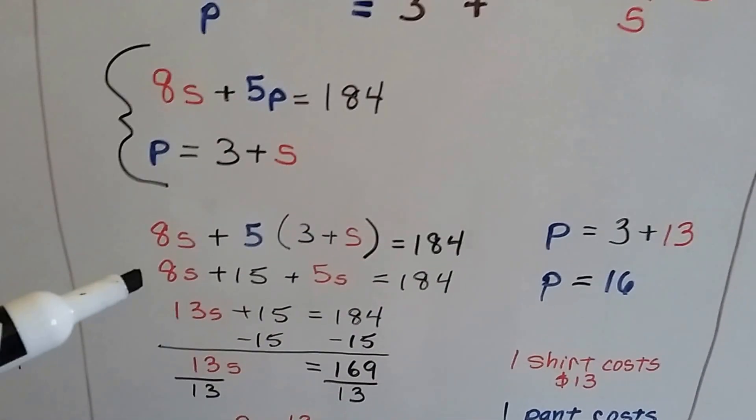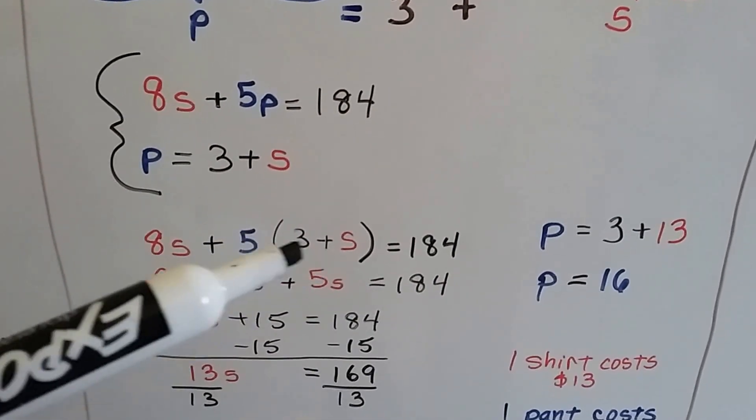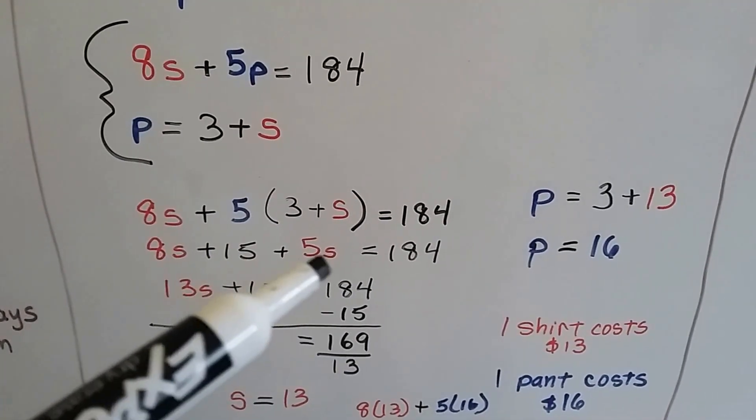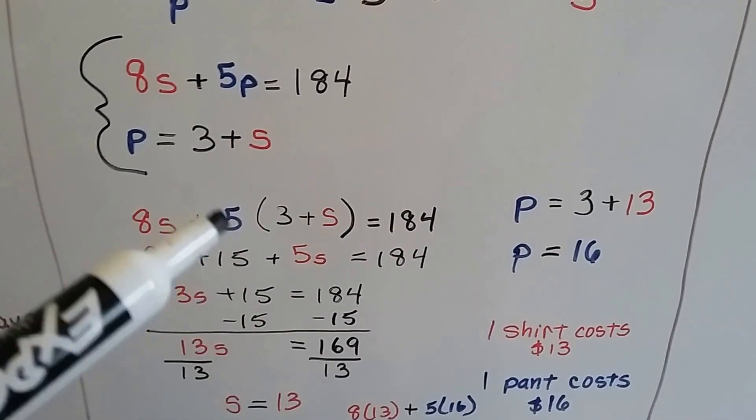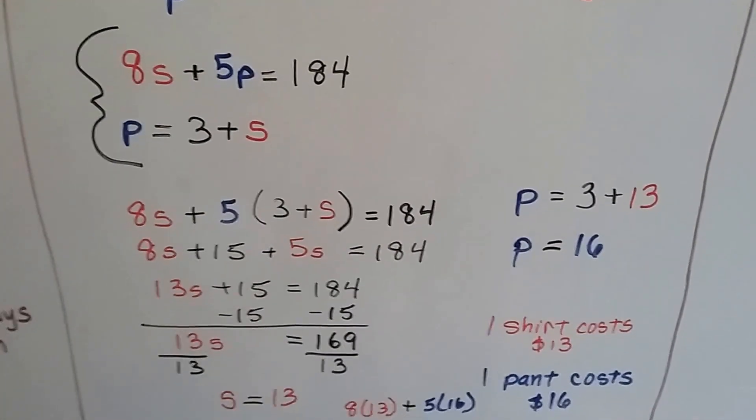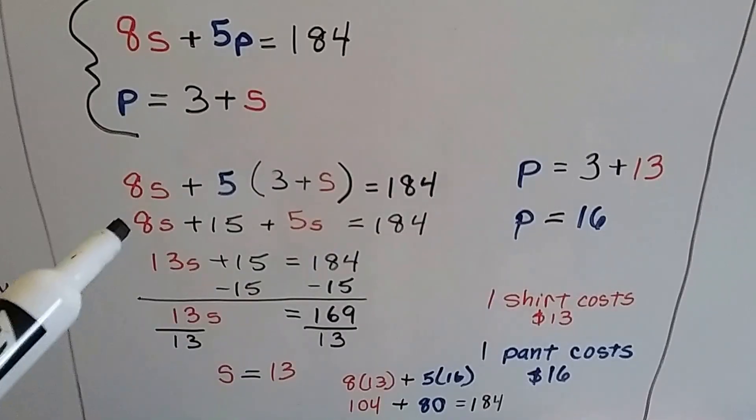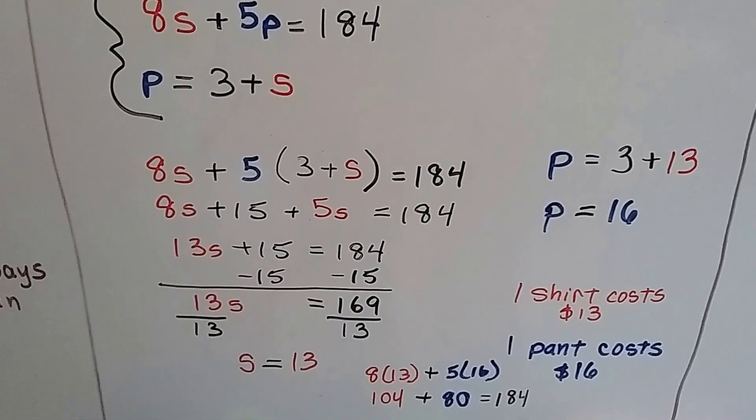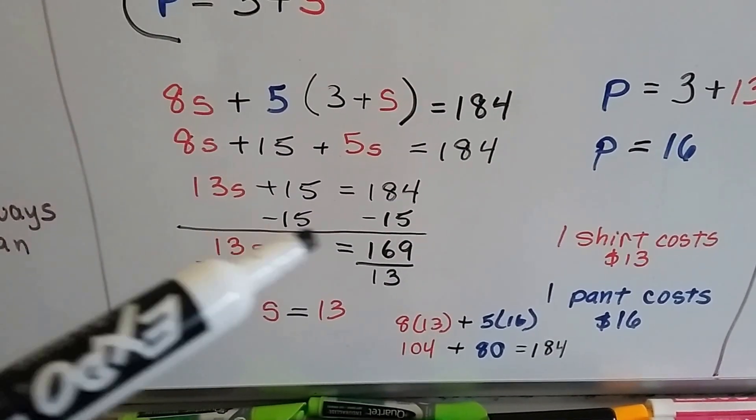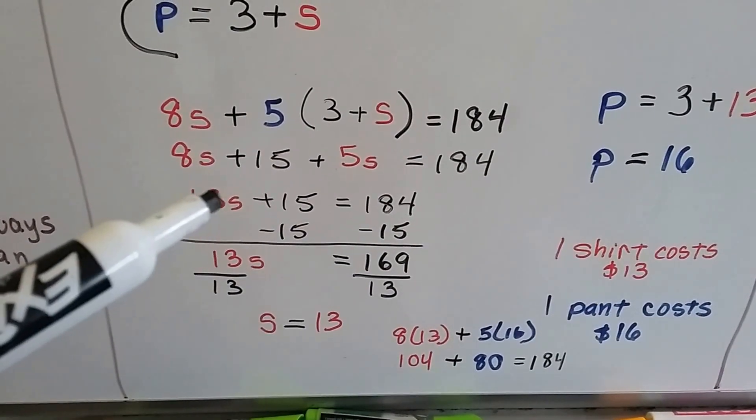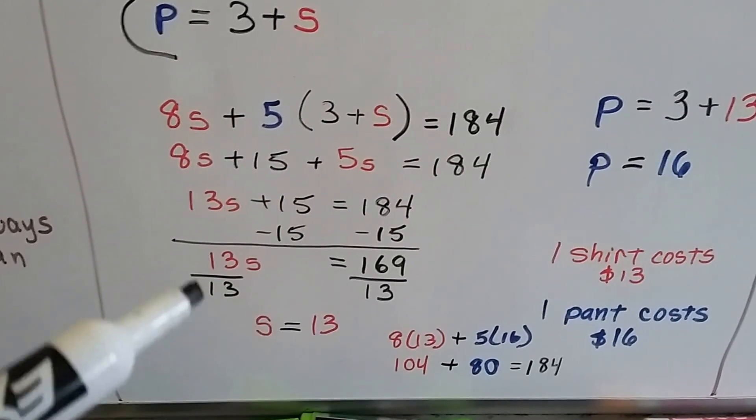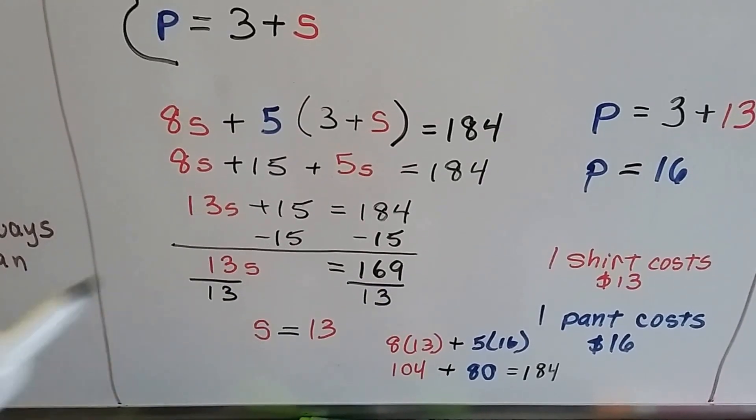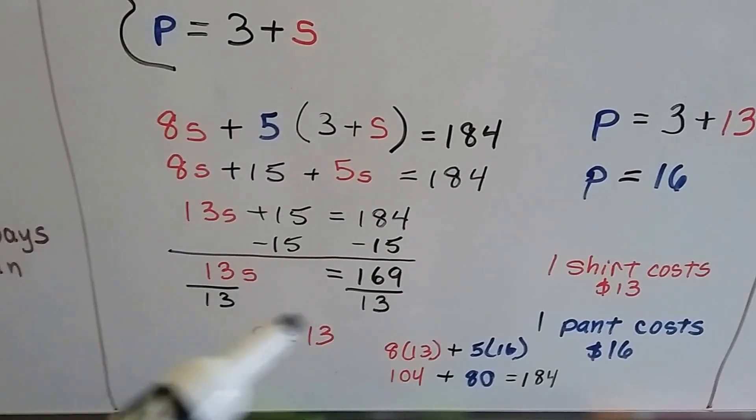All we have to do is plug in 3 plus S for the P. We'll substitute it. That'll give us 8S plus 15 plus 5S. See? 3 times 5 is 15, 5 times S is 5S. We can combine the like terms and put the 8S and the 5S together to get 13S. We drop our 15 down, equals 184. We can add a negative 15 to each side to isolate this 13S. It creates a zero pair and eliminates it. Now, we have 13S equals 169. We divide both sides by that 13 coefficient. It turns into 1S equals 13.